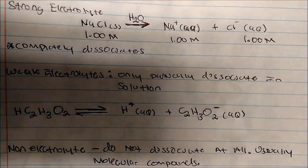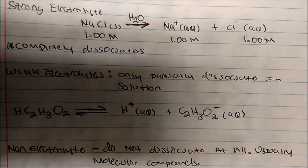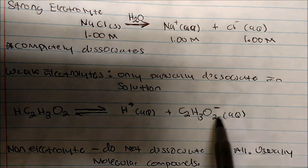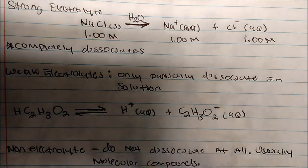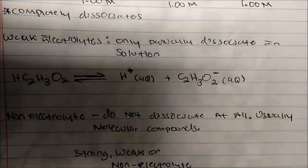Strong electrolytes are usually ionic compounds — so when we have a metal and a non-metal, you should be thinking strong electrolyte. Whenever you see just molecular compounds, they're non-electrolytes. And whenever you see some sort of compound with an H added on, that's an acid, and if you throw it in water, you'll get its conjugate base plus H+. So let's look at some examples and identify whether each is a strong electrolyte, weak electrolyte, or non-electrolyte.